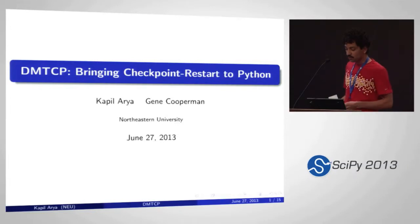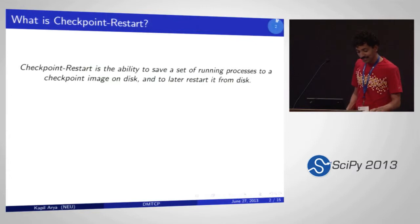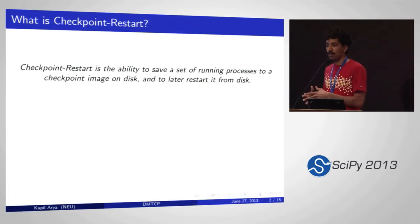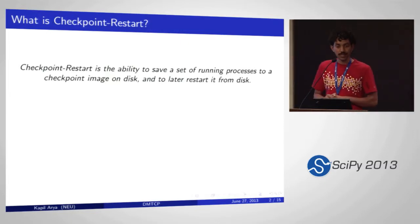My research focuses on checkpoint-restart and process-level virtualization. In this talk, I'll be talking about integrating Python with the checkpoint-restart package that we have at Northeastern. This is joint work with Gene Cooperman, my advisor. Checkpointing is the ability to save a set of running processes onto disk so that you can later restart them in case of a node failure or if you want to shut down something and restart later.